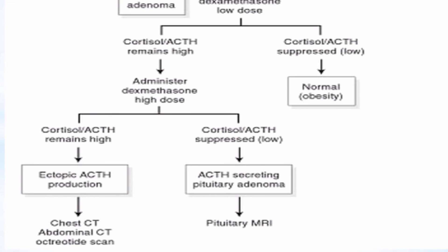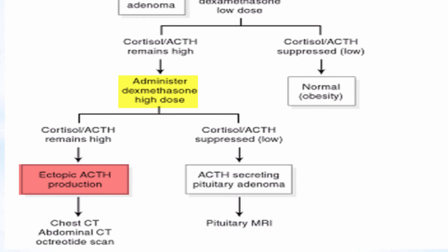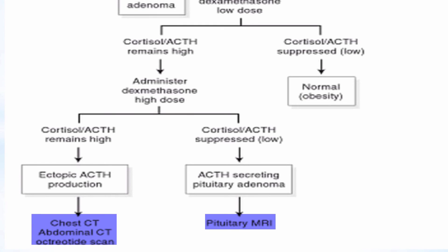To differentiate between a pituitary adenoma and ectopic production, a larger dose of dexamethasone can be given. A large dose can still partially suppress the pituitary and lower ACTH, whereas an ectopic tumor would not respond to the inhibitory effect of dexamethasone and ACTH levels would remain high. A CT or MRI can then be used to confirm any findings of neoplasia.